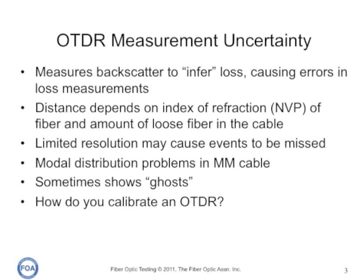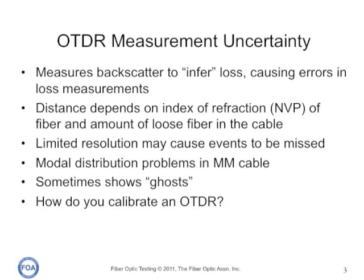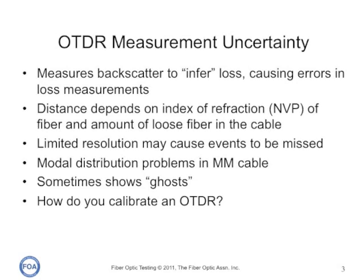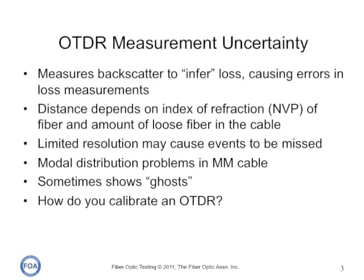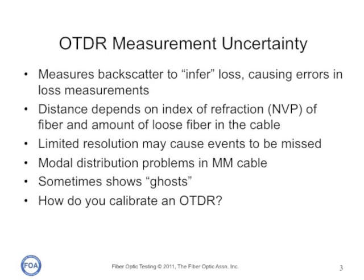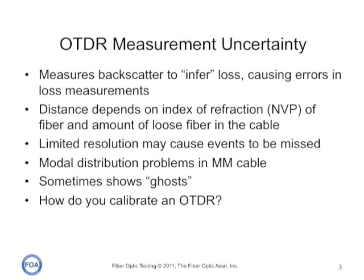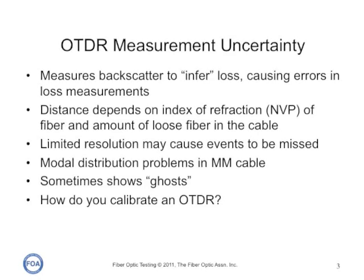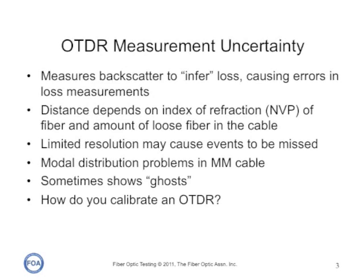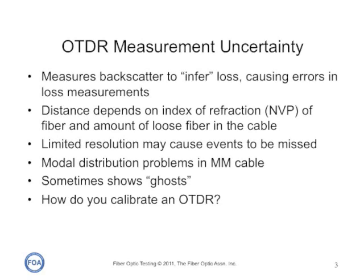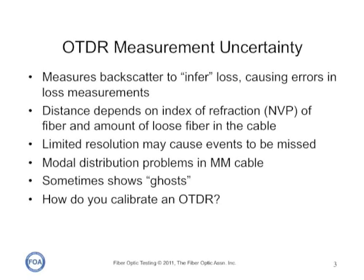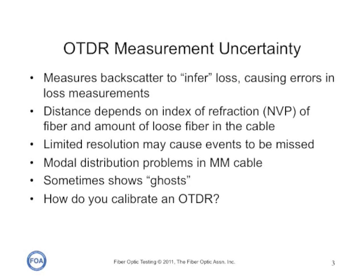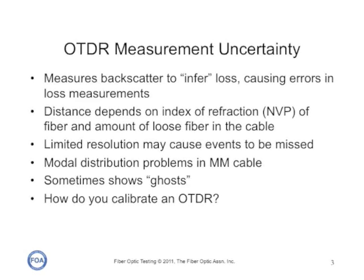The first problem with OTDRs is their measurement method. OTDRs measure the backscatter from the fiber to infer the loss, not a direct measurement like insertion loss, and this can cause errors in loss measurements. The distance that the OTDR measures depends on the index of refraction of the fiber and the amount of loose fiber in the cable. The OTDR has limited resolution, which may cause some events to be completely missed because they're covered up in the resolution. OTDRs have problems with modal distribution in multi-mode cable. And sometimes OTDRs show ghosts — things that aren't there. Finally, how do you calibrate it? Let's look at each of these in turn.